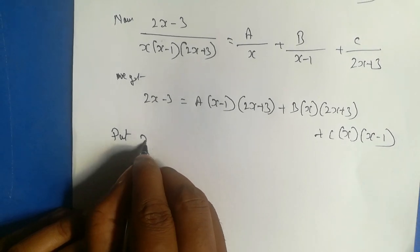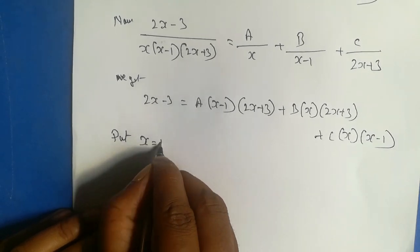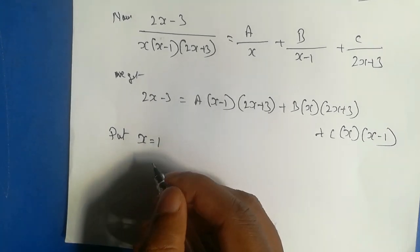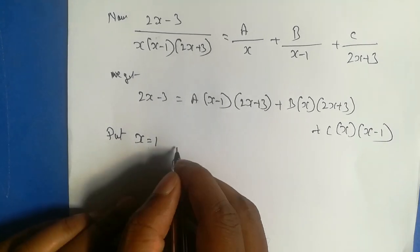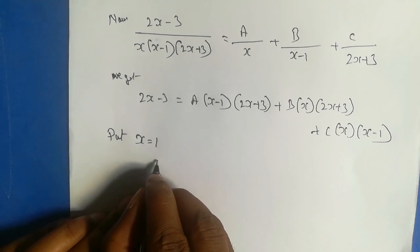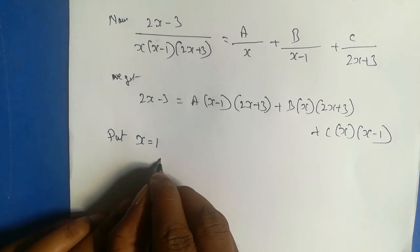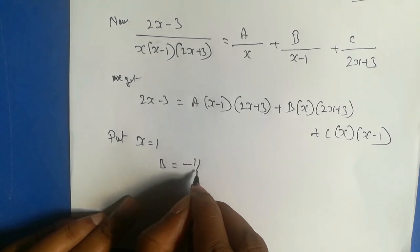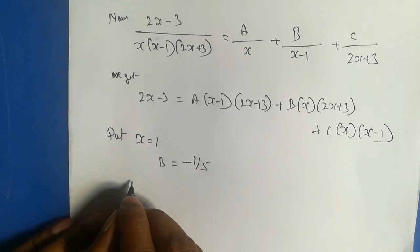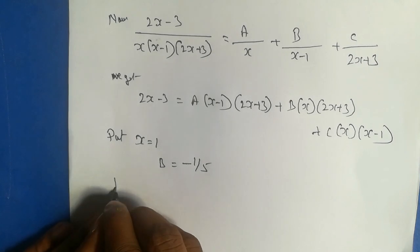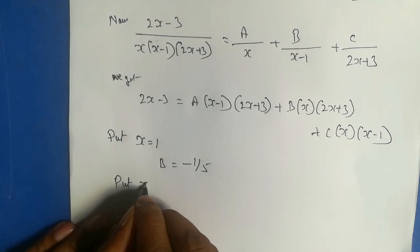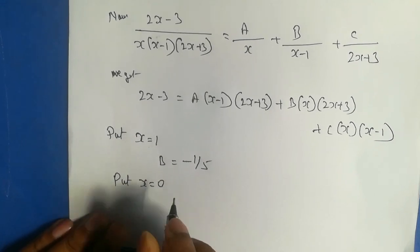Put x equal to 1, we get B equal to minus 1 by 5. By substituting x equal to 0, we will get a equal to 1.